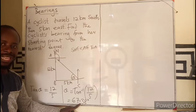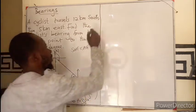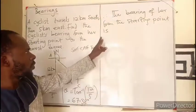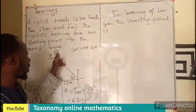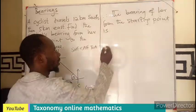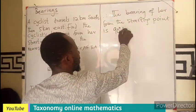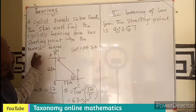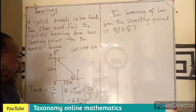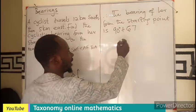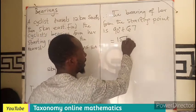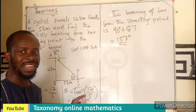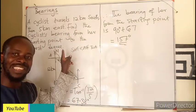Don't forget we are not looking for only this angle — we are looking for the bearing. So the bearing we are looking for is all the way from here to here. That will be 90 degrees plus 67 degrees. I was told to write my answer to the nearest degree, so the nearest degree is 67, and that will produce 157 degrees as the bearing of the cyclist from the starting point.